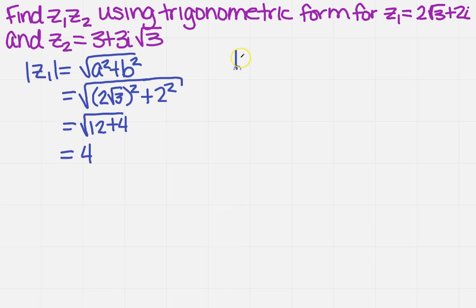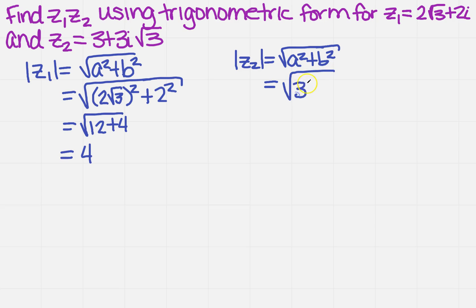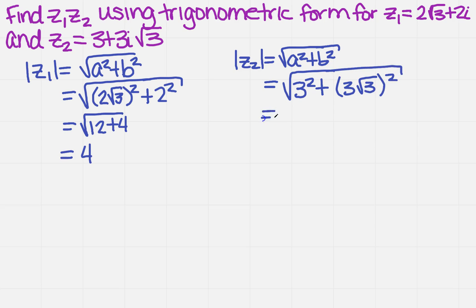Now for Z2, it's still going to be a squared plus b squared. This time a is 3 and b is 3 square root of 3. So we get the square root of 3 squared plus 3 square root of 3 squared. When I multiply that out, I get the square root of 9 plus 27, which is just going to be 6.